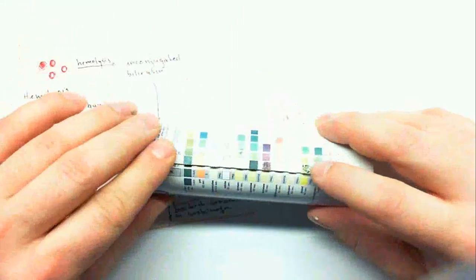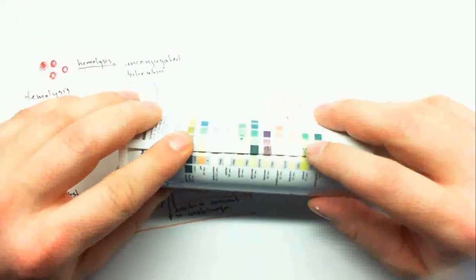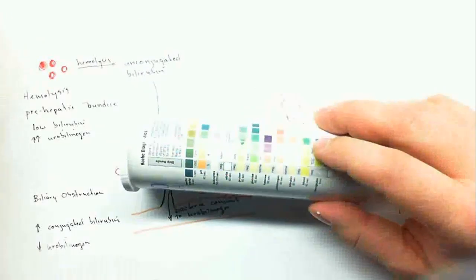Now if we took that same strip and we added blood, often in diabetes there's kidney damage, and that can actually lead to blood in the urine, and that's a problem in late stage diabetes.